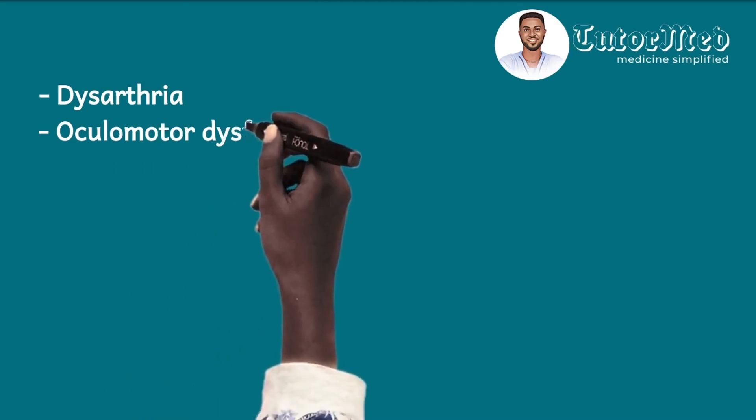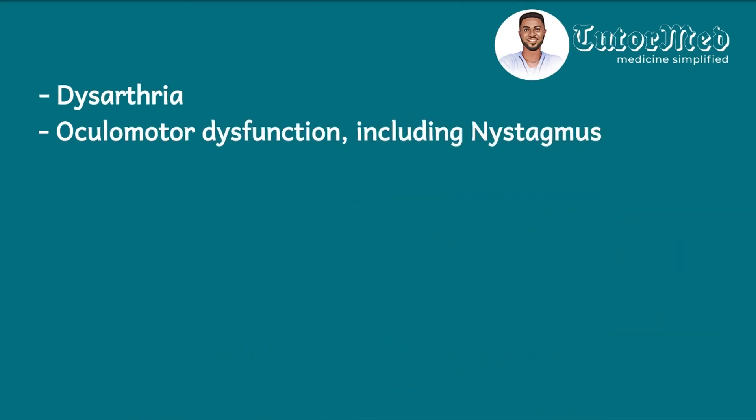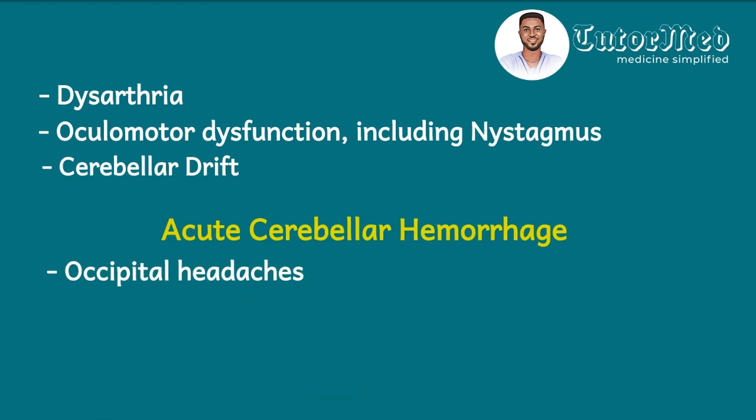You would even realize that there are even more features like dysarthria, which is scanned speech or slurred speech, then oculomotor dysfunction including nystagmus, cerebellar drift. Some of the reference texts will even give you more information that if the cerebellar lesion is caused by cerebellar hemorrhage, which is acute, a patient might have occipital headaches because of where the cerebellum is, might have neck stiffness, vomiting—all these are signs of meningism—and then raised intracranial pressure. Document all of these into your exercise book and then move on.